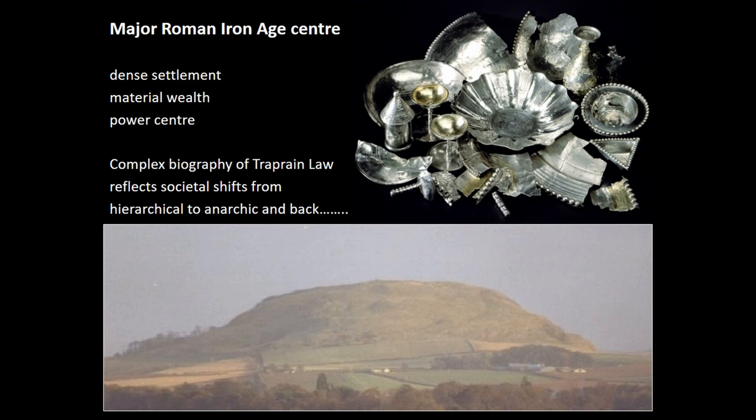One of the things most compelling about Traprain Law as a public space during the Iron Age is what happens to it later. We've seen that before the Iron Age it was a dense, rich settlement apparently at the top of some kind of hierarchical pyramidal structure. At the end of the period exactly the same thing happens again — sites like Broxmouth are abandoned sometime around the beginning of the Roman period around 100 AD, and that whole settlement pattern fades out and disappears. Traprain Law is then suddenly reoccupied, and once again, as in the Late Bronze Age, we see a dense settlement with lots of evidence for material wealth and a major power center.